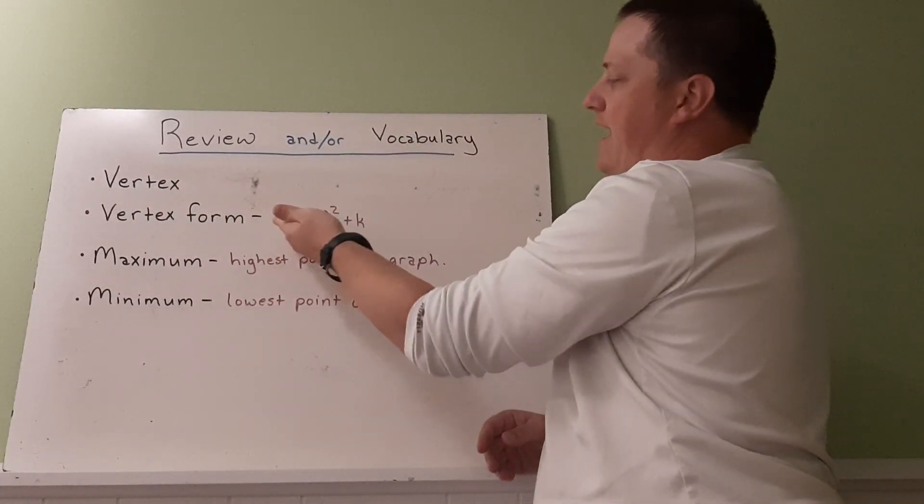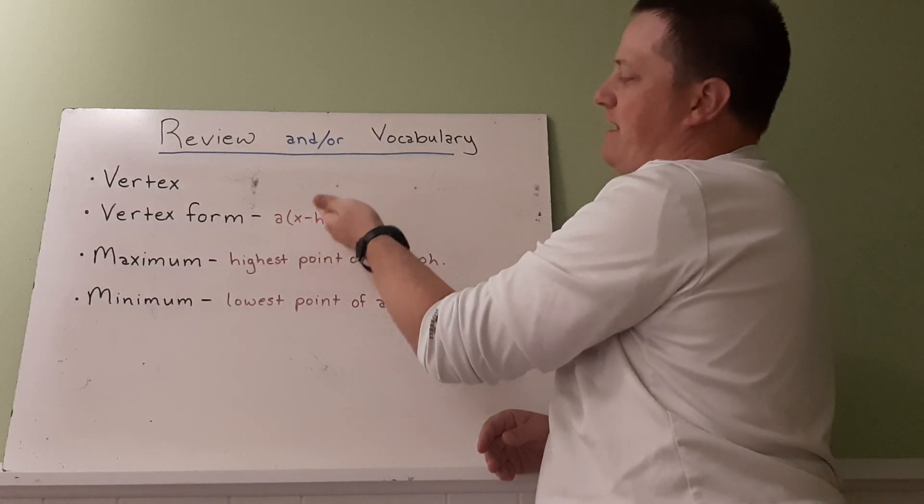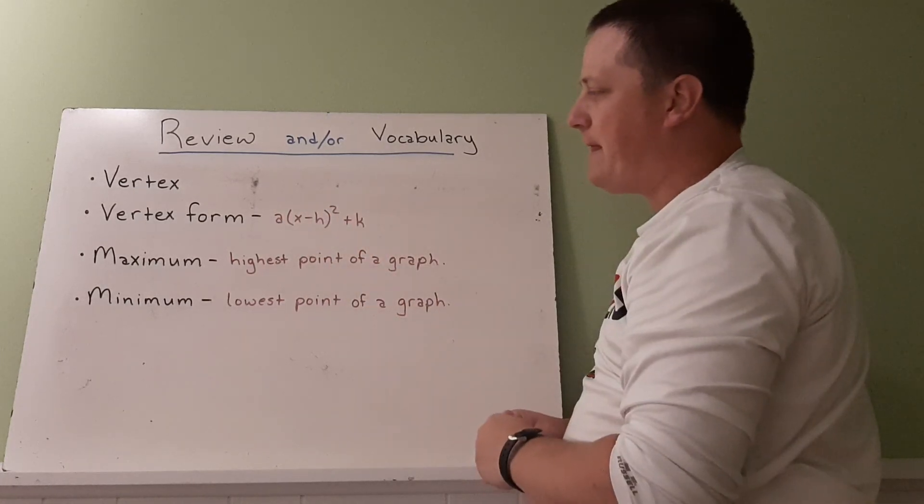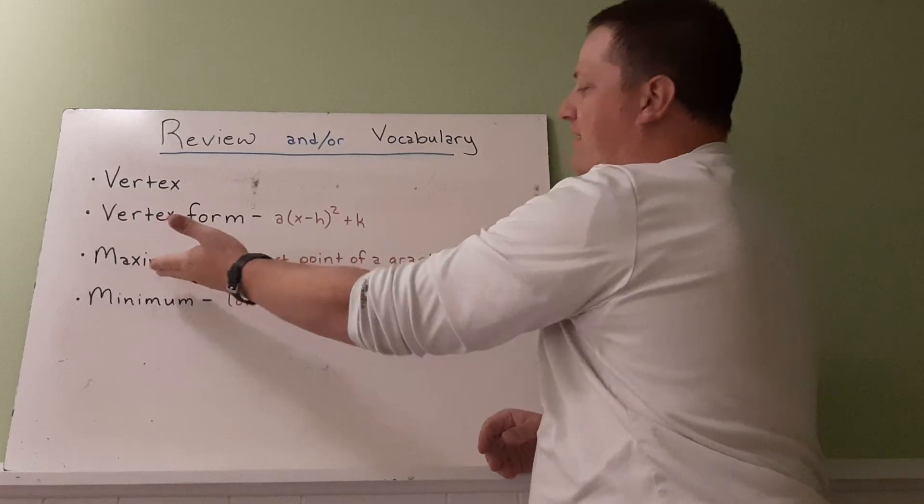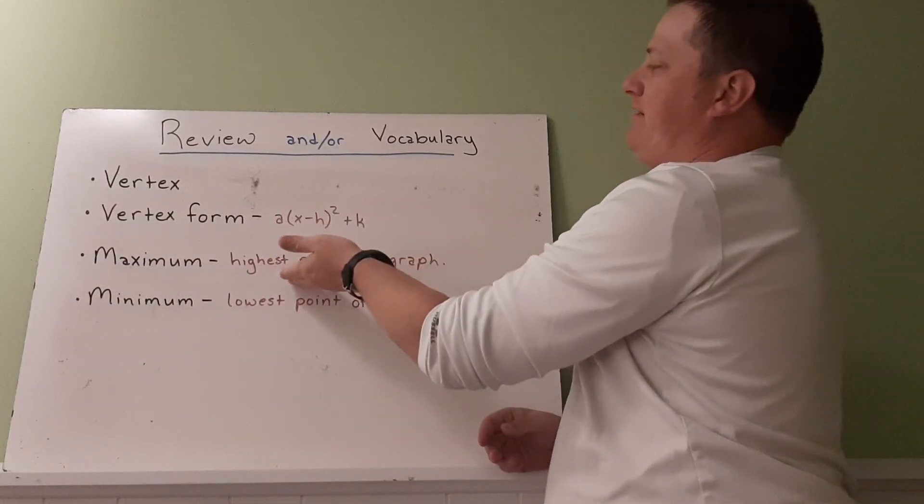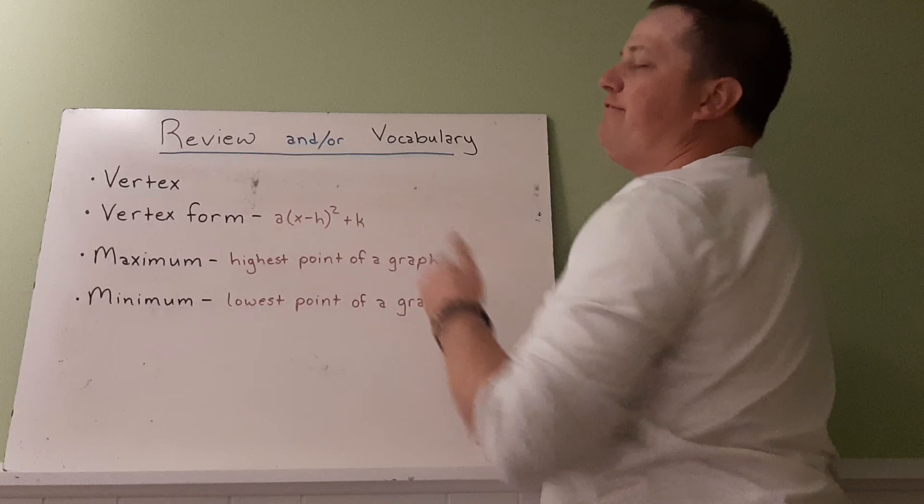Vertex form is A times x minus h squared plus k. A maximum is the highest point of a graph. This is, in quadratics, the vertex.